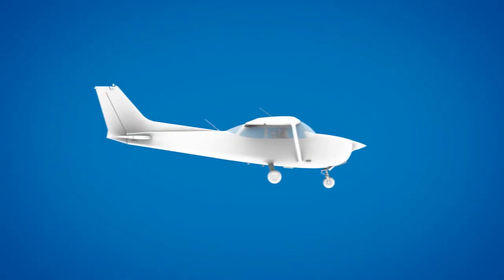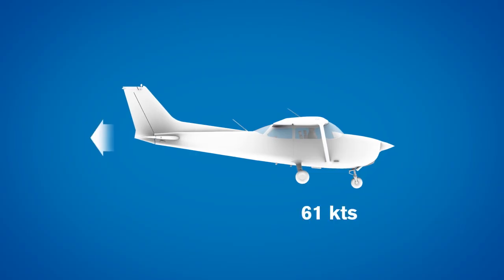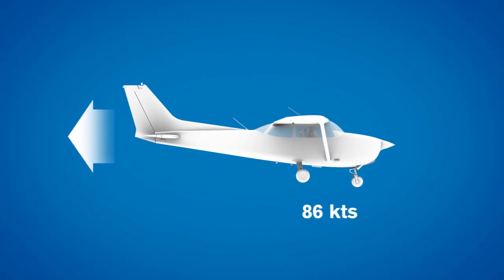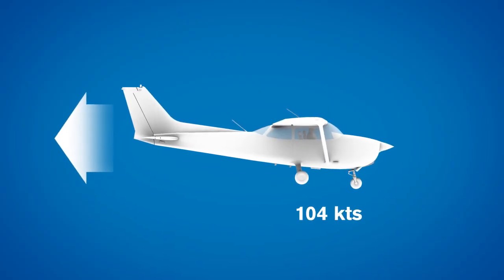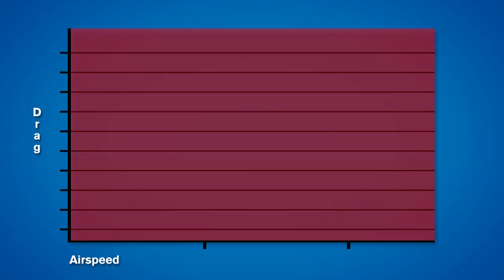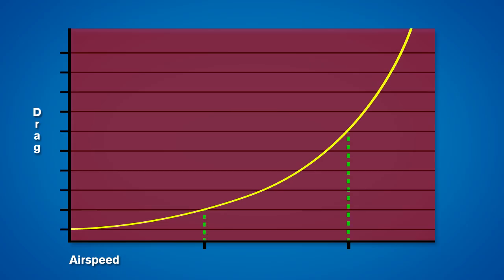The amount of parasite drag varies with the speed of the aircraft. As the airplane's speed increases, the amount of parasite drag will also increase. In fact, the amount of parasite drag you experience is directly proportional to the square of the airspeed. For example, an aircraft traveling at 120 knots will experience four times as much parasite drag as the same plane going 60 knots at the same altitude.